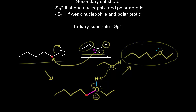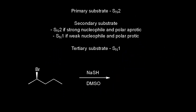Notice we don't have to worry about any stereochemistry for our final product — there are no chiral centers. Let's look at another reaction. We're starting with a secondary alkyl halide. Looking at the summary, with a secondary substrate we could have either an SN2 or an SN1 mechanism, so we need to look at a few more things.